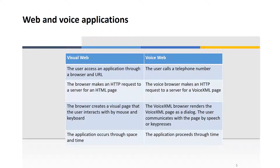Voice applications have analogies to the visual web. In the visual web, users access an application through a browser and a URL; in the voice web, people call a phone number associated with a specific application. In the visual web, the browser makes an HTTP request to the server; in the voice web, the voice browser makes an HTTP request to a VoiceXML page — HTML and VoiceXML are analogous. The browser visualizes the HTML page; the VoiceXML browser takes the VoiceXML and presents it as a dialog, turning it into audio sent to the user over the phone channel.